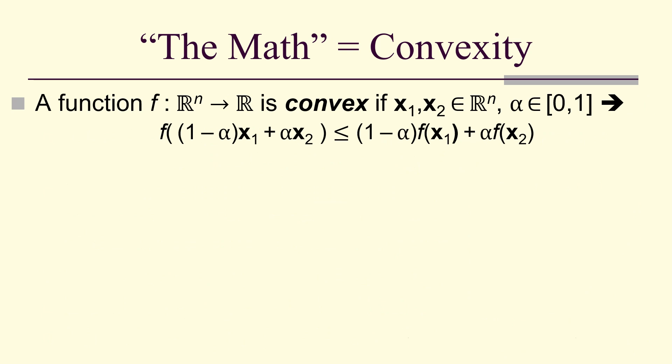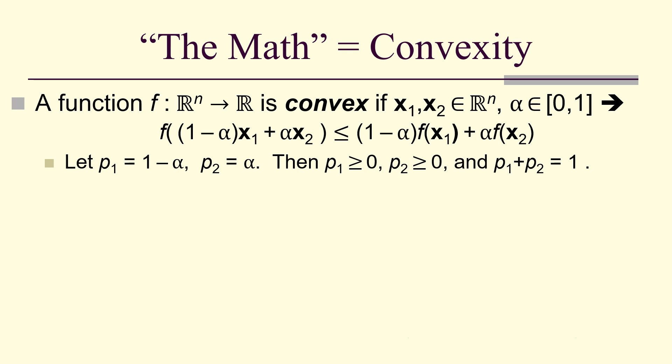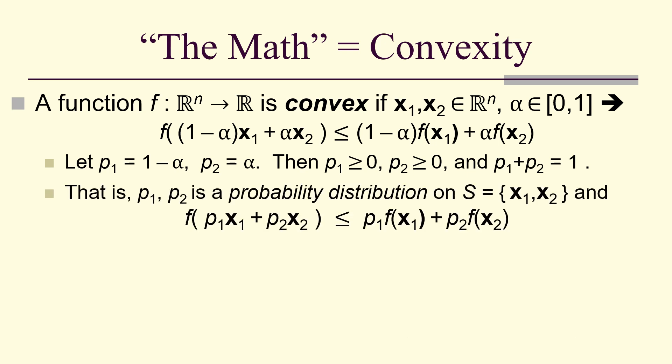A function f from R^n to R is convex if and only if, given two points and alpha in [0,1], f of the linear combination (1 minus alpha)x_1 plus alpha x_2 is less than or equal to (1 minus alpha)f(x_1) plus alpha f(x_2). The converse is also true. If we let p1 equal 1 minus alpha and p2 equal alpha, then p1 and p2 are non-negative and sum to 1 — a probability distribution — and f(p1 x_1 plus p2 x_2) is less than or equal to p1 f(x_1) plus p2 f(x_2).